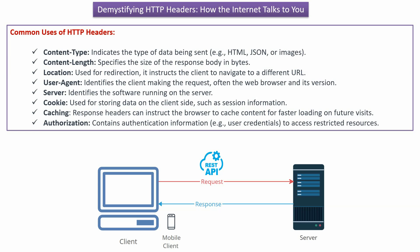The third one is location, which is used for redirection — it instructs the client to navigate to a different URL. The fourth one is user-agent, which identifies the client making the request, often the web browser and its version. The fifth one is server, which indicates the software running on the server.